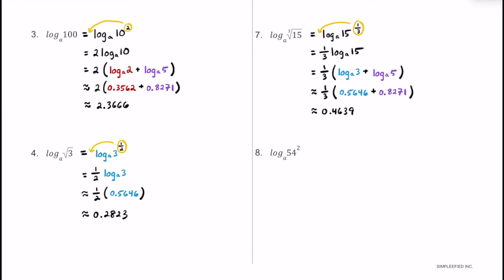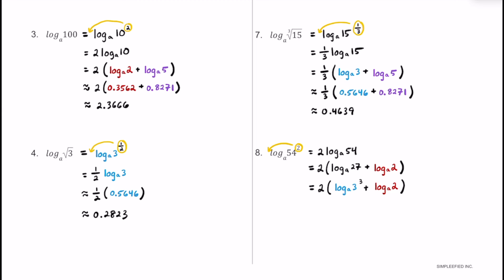For number 8, we have log base a of 54 raised to the second power. Right away, we can use the power property and move that exponent of 2 down in front. Then we break log base a of 54 into smaller factors using the product property, starting with 27 times 2, giving us 2 times log base a of 27 plus log base a of 2. We rewrite 27 as 3 to the third power, so we have 2 multiplied by log base a of 3 to the third power plus log base a of 2. Using the power property, we bring that 3 in front.